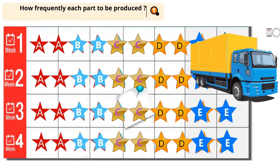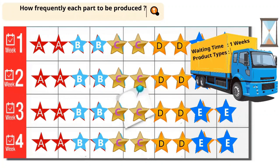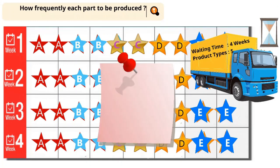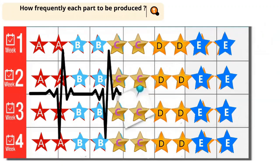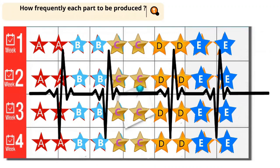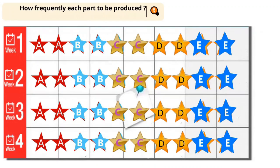The dispatch truck has to wait for one week to get all five products for dispatch. It is possible by having a philosophy of every part every week — five types in a week. For this, the production levelling ratio is 5. The more frequently we produce each part, the working capital cycle will be that much better. Of course, it is related to the customer's requirement.